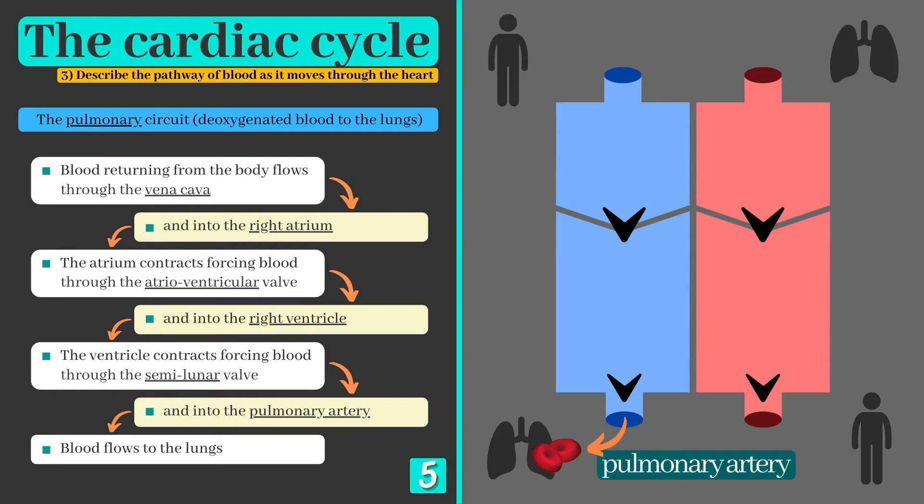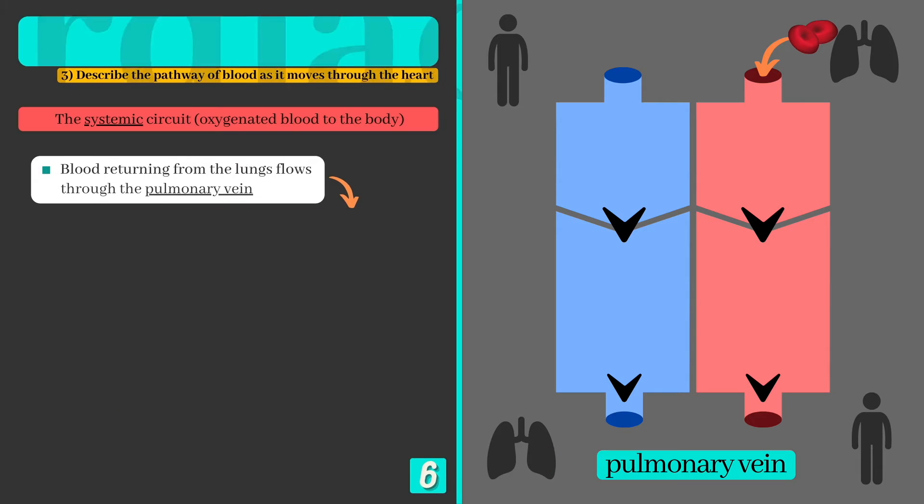When blood reaches the lungs, specifically the alveoli, it unloads carbon dioxide and picks up more oxygen molecules that bind to the hemoglobin contained within the red blood cells.